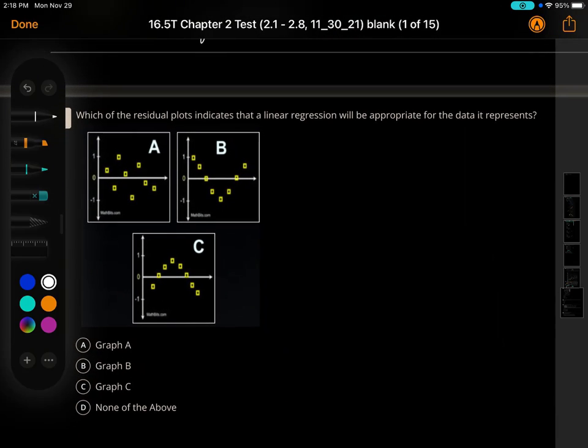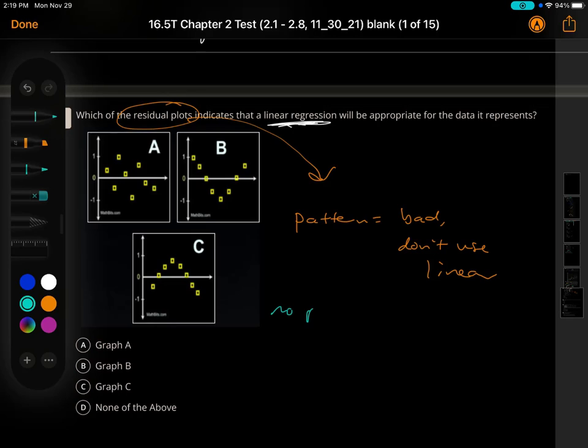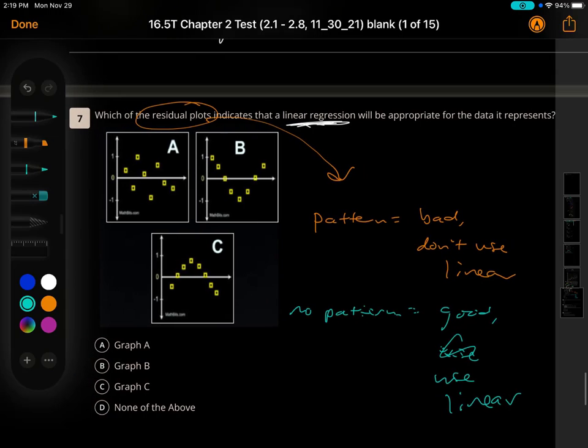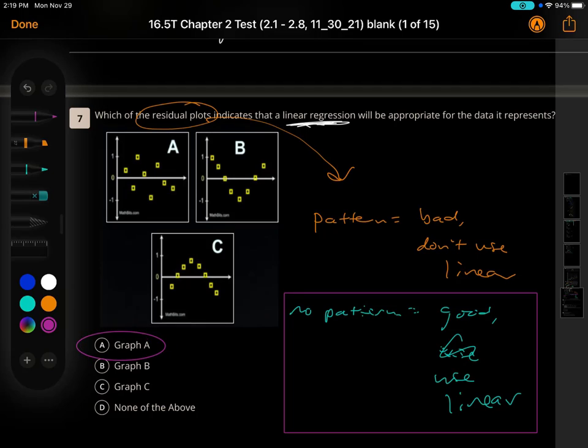Which of the residual plots indicates that a linear regression would be appropriate? Remember, in residual plots, we stated that a pattern is bad. Don't use linear. And if there was no pattern, that means it's good. Use linear. I'm trying to find one that is no pattern, and which one has no pattern? Because I want linear. That would be A. Number 7 is A.